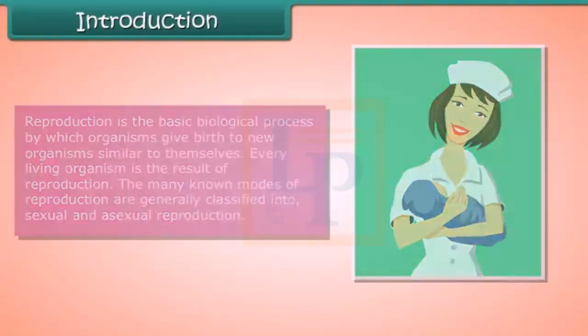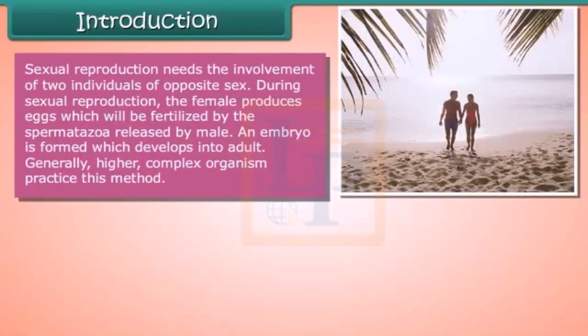Sexual reproduction needs the involvement of two individuals of opposite sex. During sexual reproduction, the female produces eggs which will be fertilized by the spermatozoa released by the male. An embryo is formed which develops into an adult. Generally, higher and more complex organisms practice this method.